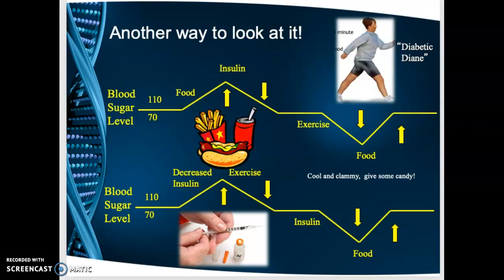Another example: Diane has normal blood sugar in the morning but forgets to take her insulin — blood sugar goes up. She exercises as directed — blood sugar decreases. She then remembers and gives herself insulin — blood sugar decreases further. She becomes cool and clammy, eats candy — blood sugar goes back up. Know this relationship and teach it to your patients.